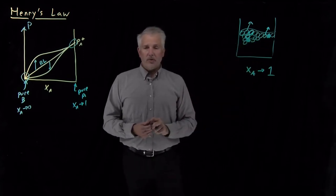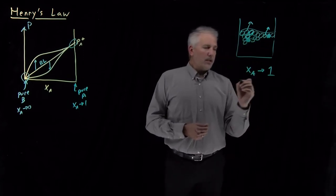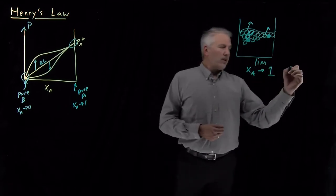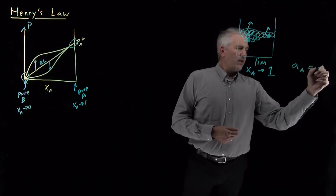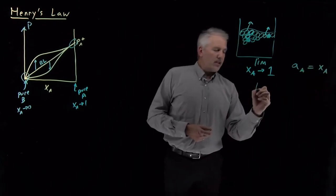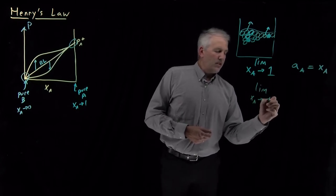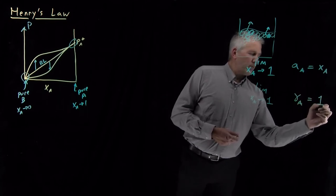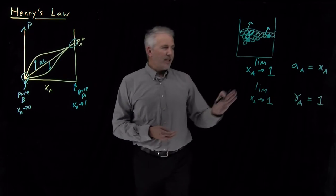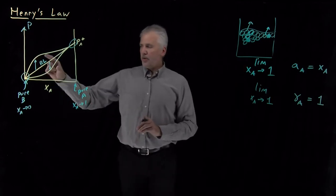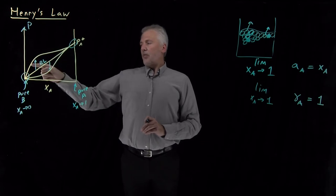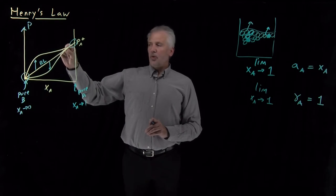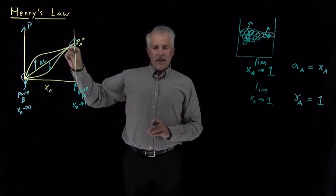As the mole fraction becomes one, relatively few molecules even have a chance to be perturbed by a B molecule. The overwhelming majority behave just like solvent, so in the limit as the mole fraction of A approaches one, the activity of A equals the mole fraction and the activity coefficient of the solvent approaches one. This is why, regardless of whether we have positive or negative deviations, as we approach a pure solvent the system becomes more and more Raoult-like.